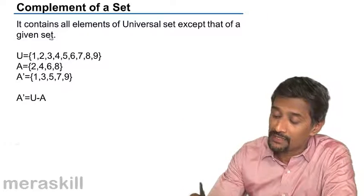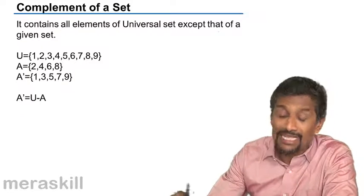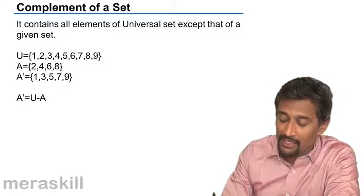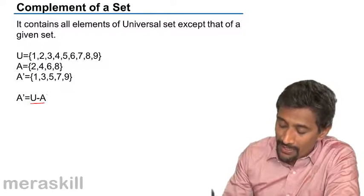So complement of a set contains all the elements of universal set except that of a given set. Let's say for example U is 1, 2, 3, 4, 5, 6, 7, 8, 9. A is 2, 4, 6, 8. So A dash is going to be U minus A.